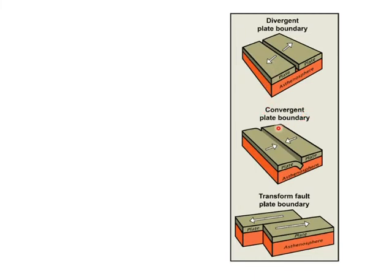A convergent plate boundary — convergent meaning moving together — is where fold mountains are formed. When one plate crashes into another, it creates mountain ranges and some very violent volcanoes. Then when the plates are moving sideways next to each other, it's called a transform plate boundary. The San Andreas Fault in California, one of the most earthquake-dangerous areas in the world, is on a transform plate boundary. To recap: divergent or constructive means moving apart; convergent or destructive means moving together, destroying plate as it goes; and transform, also called conservative, means the plates are moving but not creating or destroying crust — keeping things the same.